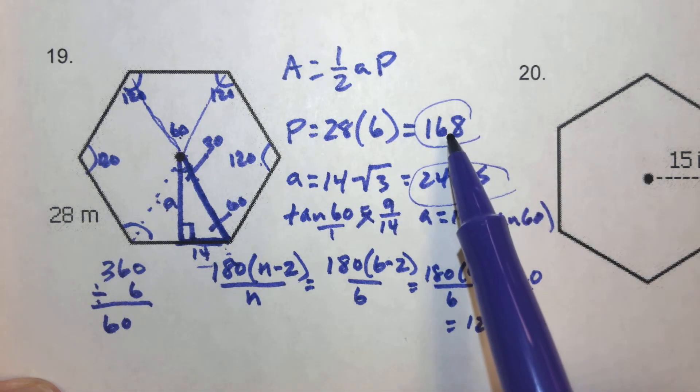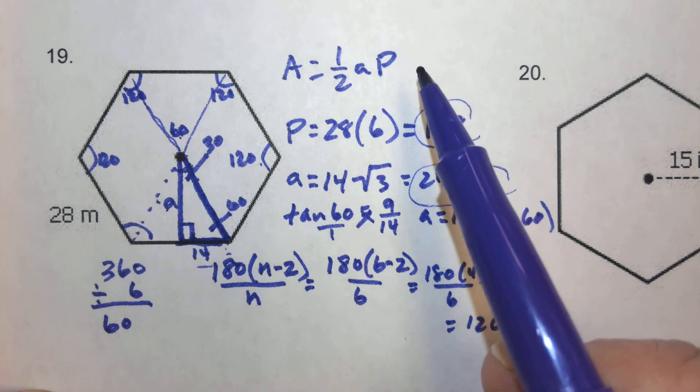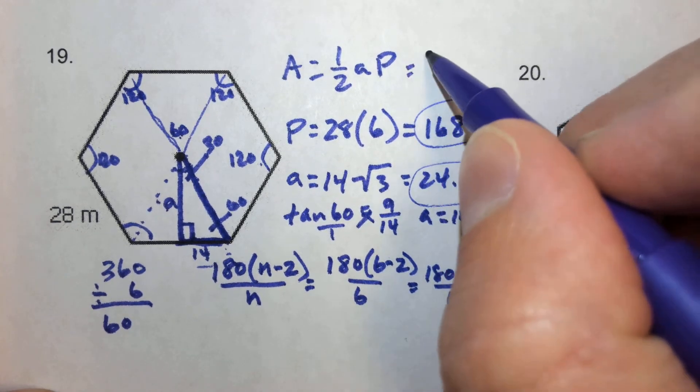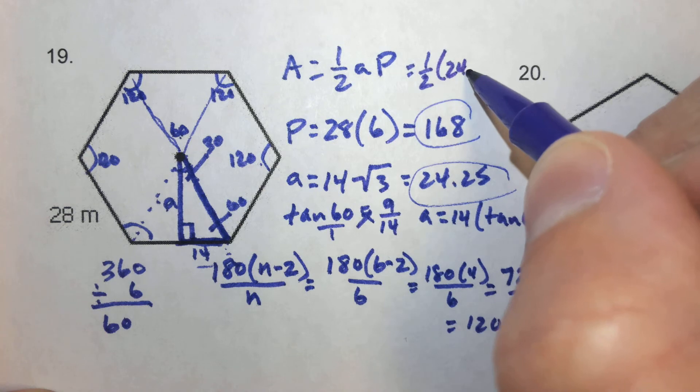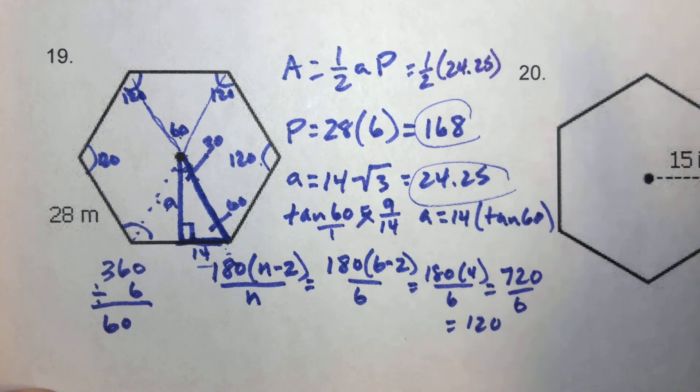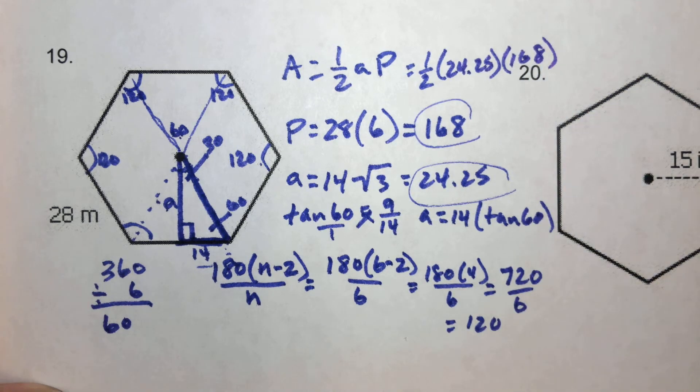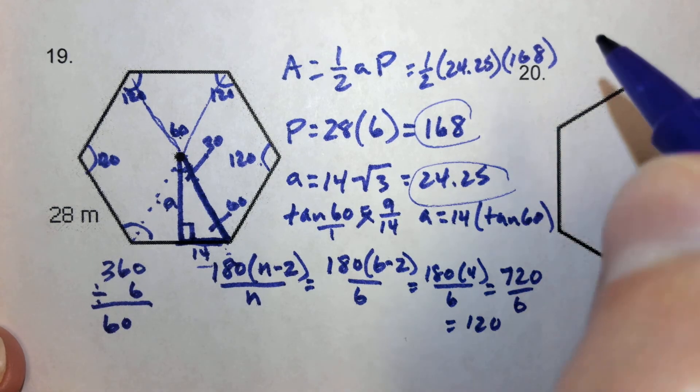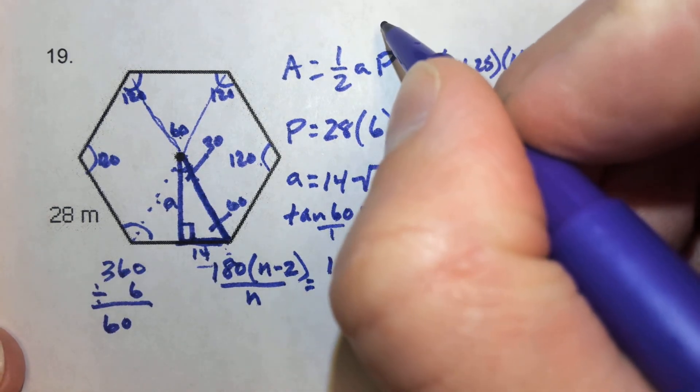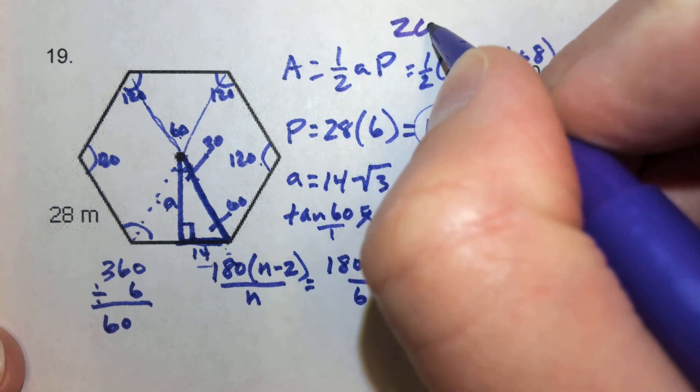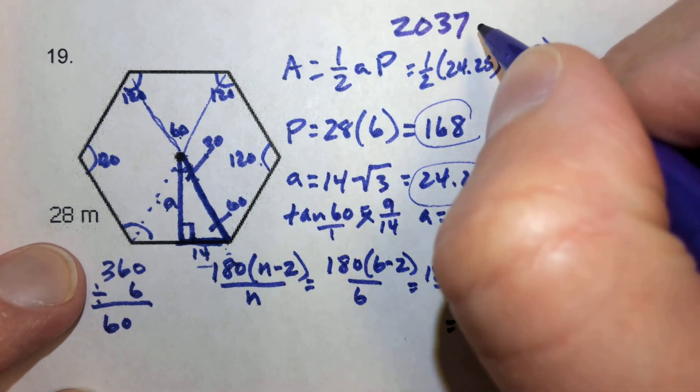We've got the perimeter of 168. So we're just going to plug that into our area formula, which is one-half the apothem 24.25 times the 168, which is the perimeter. That's the same thing as apothem times perimeter divided by 2, which comes out to 2,037 square meters.